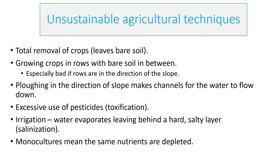Ploughing in the direction of the slope is problematic - instead of ploughing along the slope, if you plough either up or down you massively increase channels which increase water flow and erosion. Excessive use of pesticides can toxify the land or the plants. Poor irrigation methods such as spray irrigation mean water can evaporate, leaving a salty layer causing salinization. Monocultures mean the same nutrients are constantly being depleted from the soil.